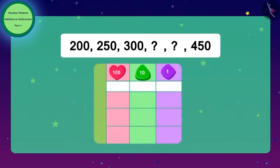Similarly, to get the number after 300, we will have to add 50 to 300. So, the next number is 350. Now, to get the next number after 350, we will have to again add 50 to 350. And we get 400.